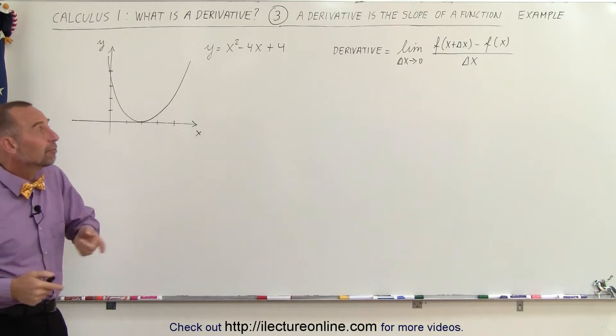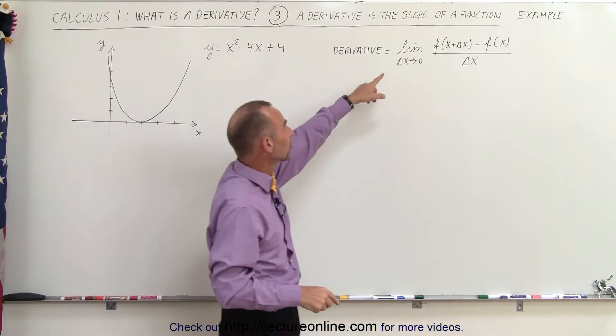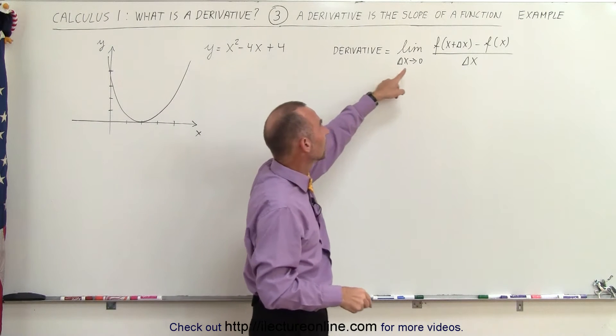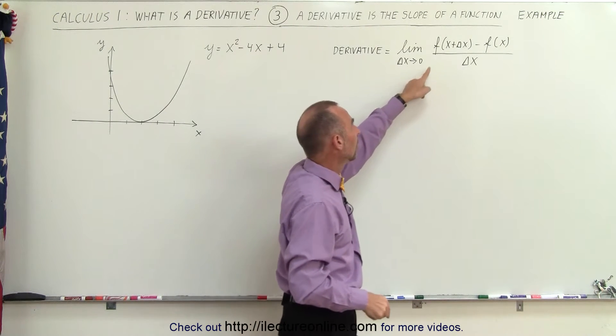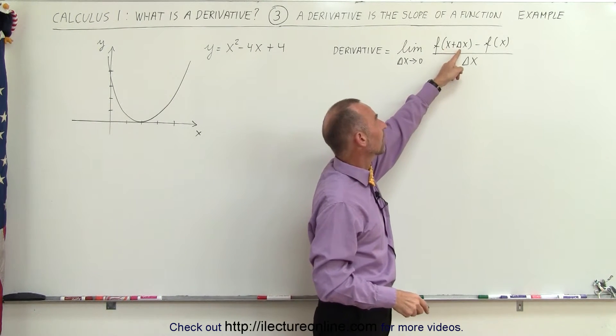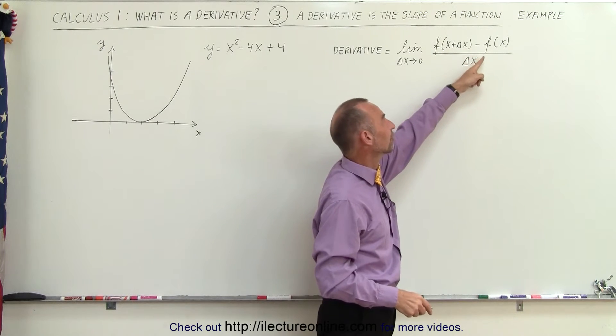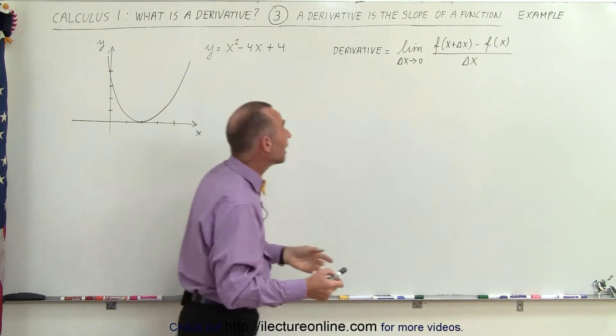To find the derivative, we're going to use this particular definition. It is the limit, as delta x goes to 0, of the function evaluated at x plus delta x minus the function evaluated at x, divided by delta x.